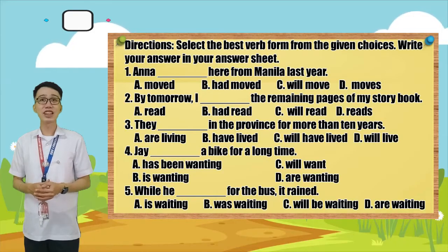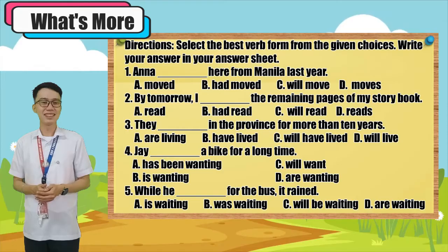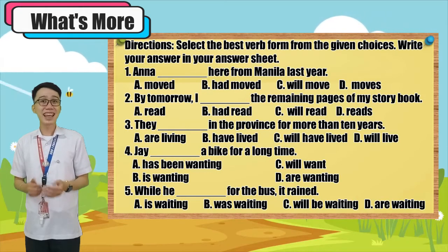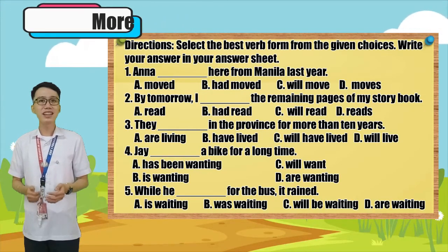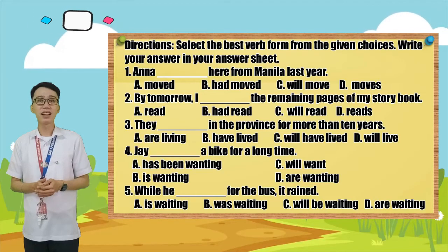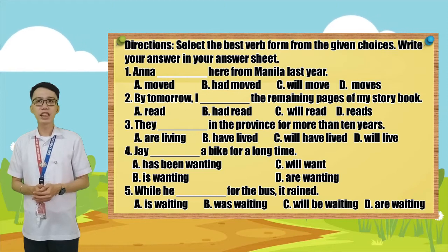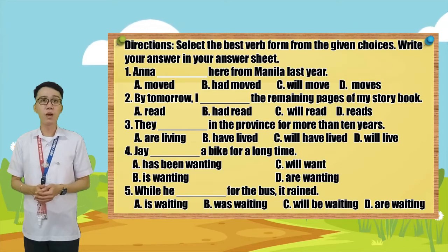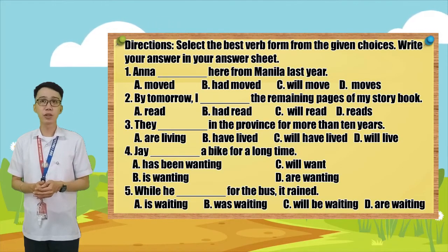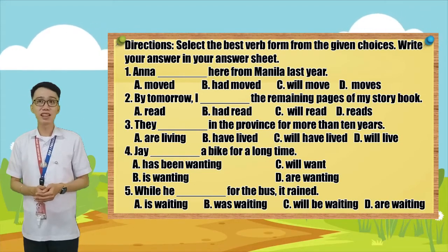After exploring the ideas and concepts of aspects of verbs, how about a short practice exercise? Directions: Select the best verb form from the given choices. Write your answer in your answer sheet. Number one: I _____ in Manila last year. A. Move. B. Had moved. C. Will move. D. Moves. Number two: By tomorrow, I _____ the remaining pages of my storybook. A. Read. B. Had read. C. Will read. D. Reads.